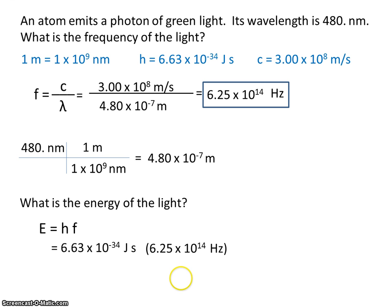So make sure you can work your calculator and that you get a final answer of 4.14 times 10 to the minus 19th joules. Remember that energy is measured in joules.